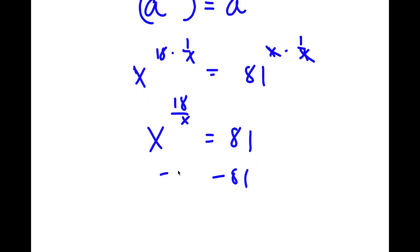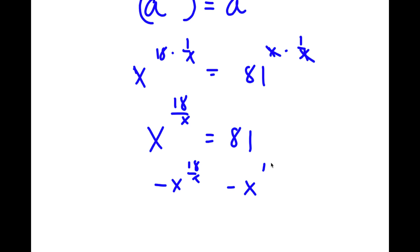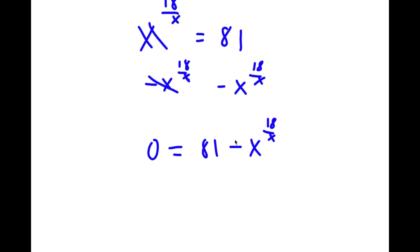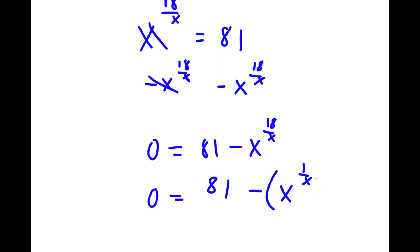Now if I subtract x to the power of 18 over x on both sides, these two cancel out and I have 0 is equal to 81 minus x to the power of 18 over x. And now I'm going to rewrite this as 0 is equal to 81 minus x to the power of 1 over x, all to the power of 18.